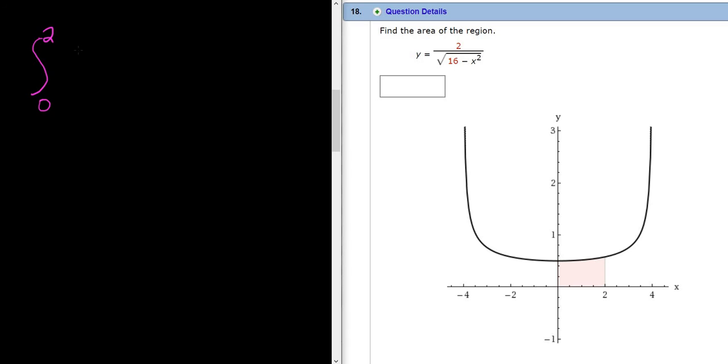And all we have to do is integrate this. So it's 2 over the square root of 16 minus x squared dx. So the area under the graph is given by the definite integral from 0 to 2, left to right, and x values of this expression here.